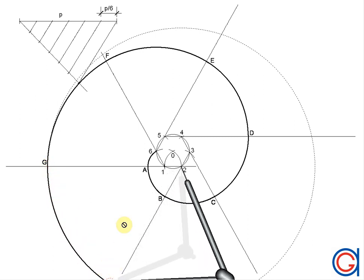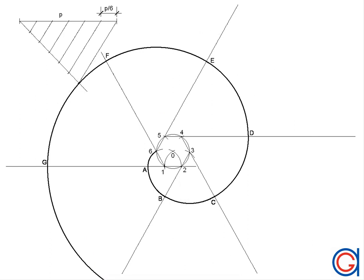For continuation, with our compass set on point two and length 2G, we now have our six-point center circle spiral given the distance P between branches.